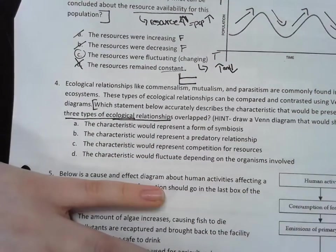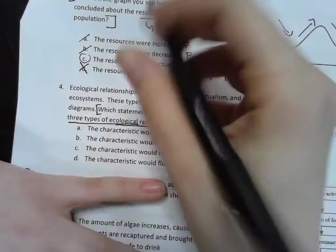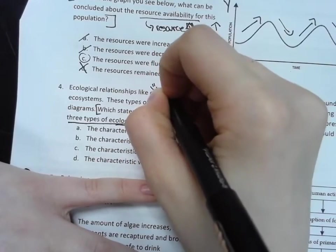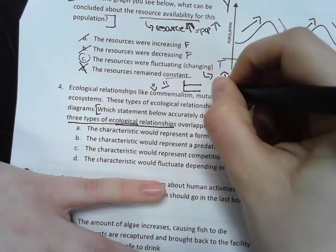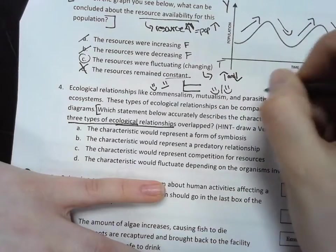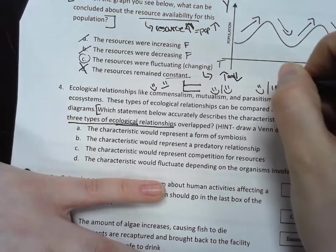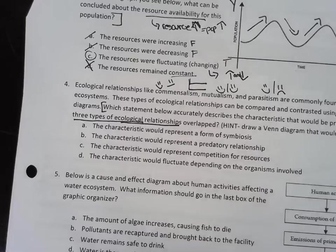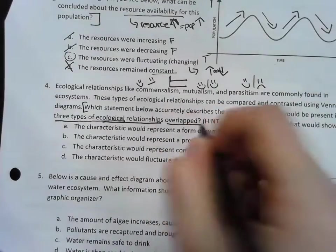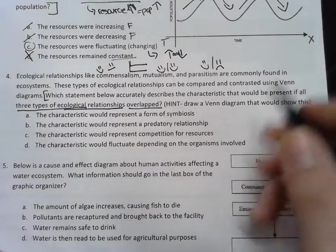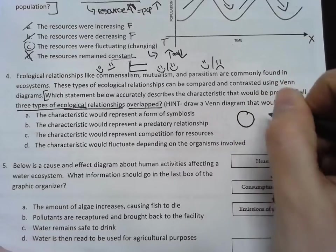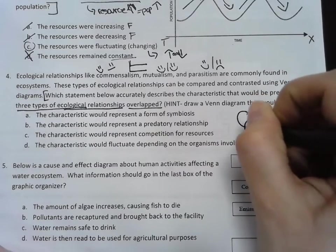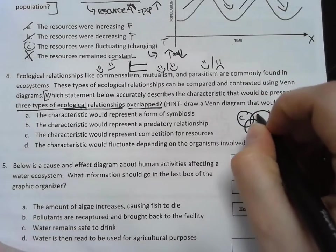So if I go back in the beginning, I want to see what three ecological relationships they were talking about. So commensalism - remember one species is happy and the other one doesn't care. Mutualism - they're both happy. And parasitism is one is really happy and one is like 'whoo, get off of me, I'm really unhappy.' Alright, so it's asking if all of them overlapped.